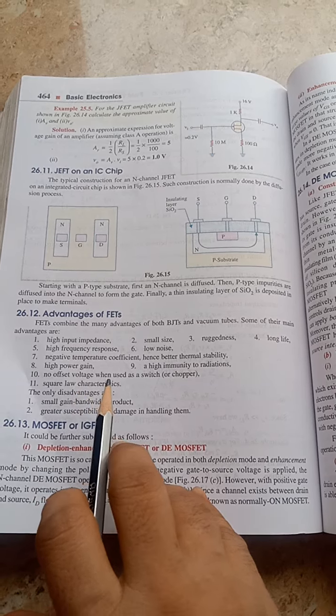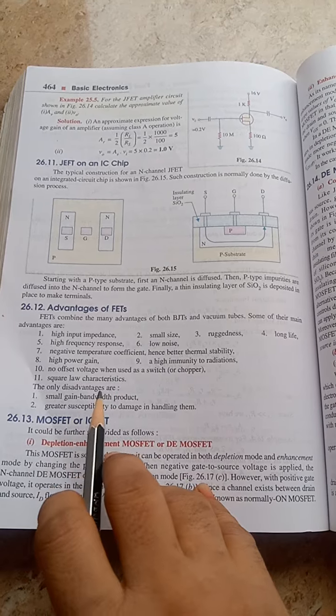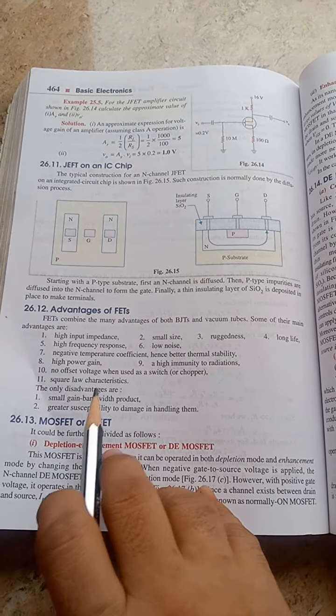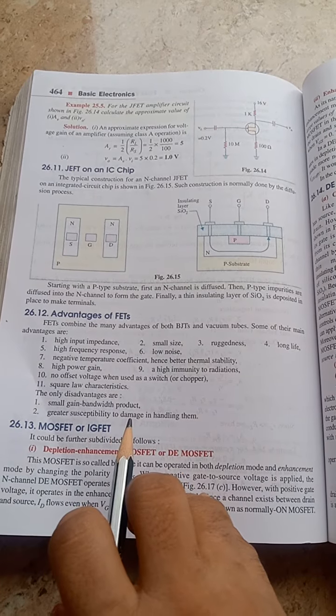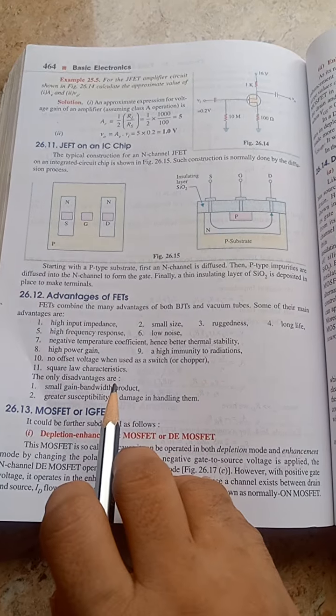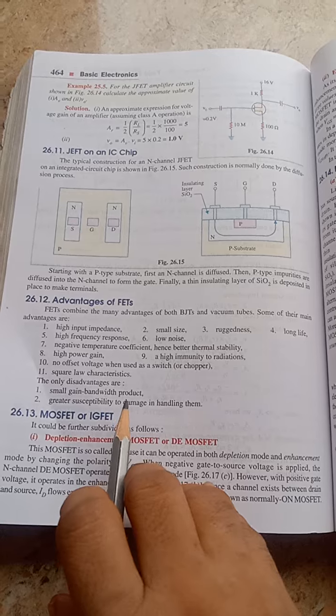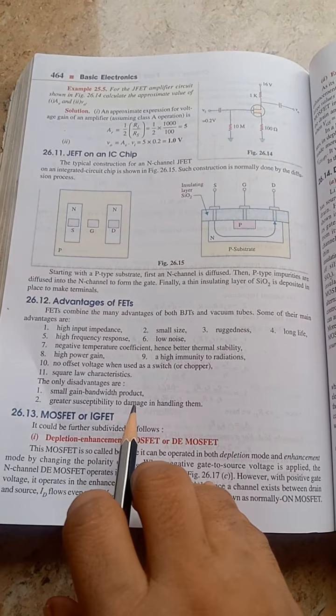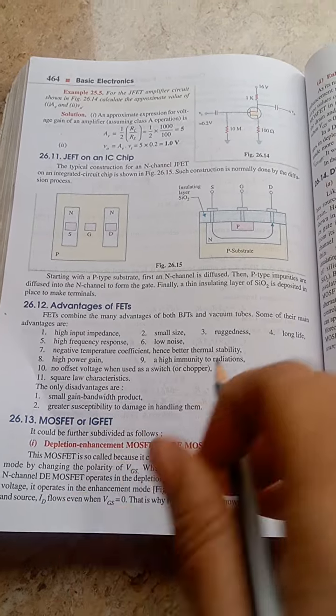In fact it is also used as a switch or chopper. Square law characteristics. The only disadvantages are small gain bandwidth product and greater susceptibility to damage in handling them. It is more sensitive - this means sensitivity is a disadvantage.